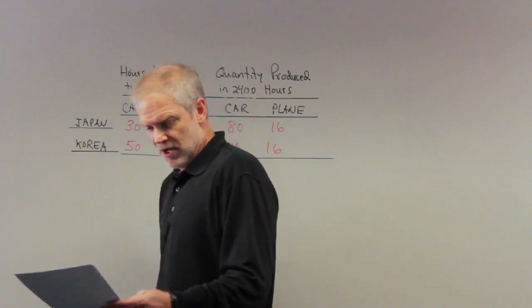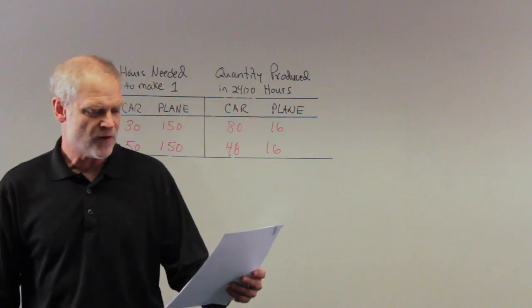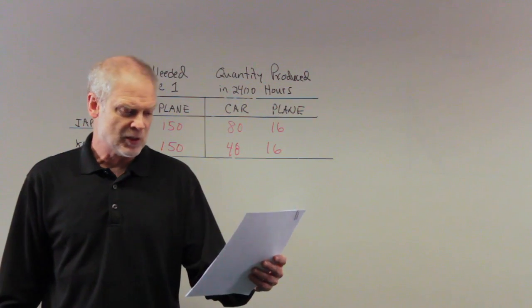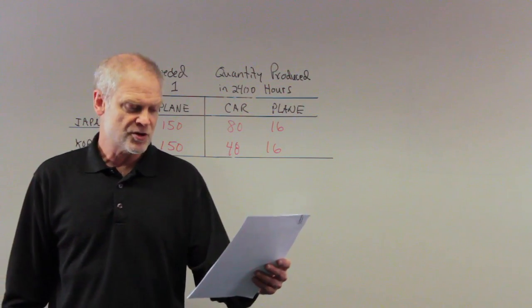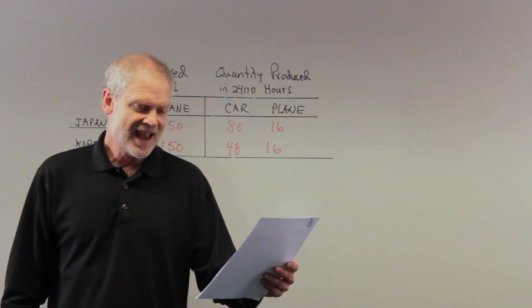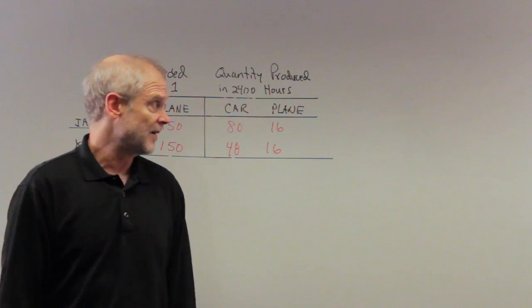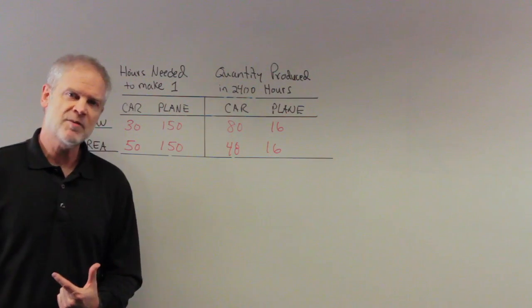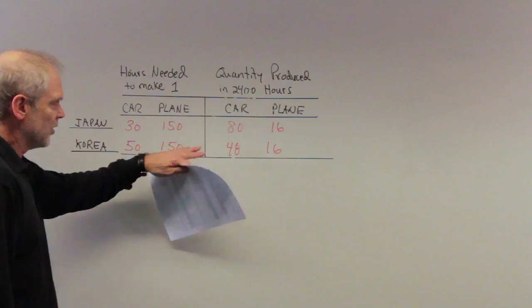So what I want to know is assume that Japan and Korea each has 2,400 hours available. Originally, each country divided its time equally between the production of cars and planes. Now each country spends all its time producing the good of which has a comparative advantage. As a result, the total output of cars increases. That's a tough problem. First thing we have to do is find out in which good the countries have comparative advantages.